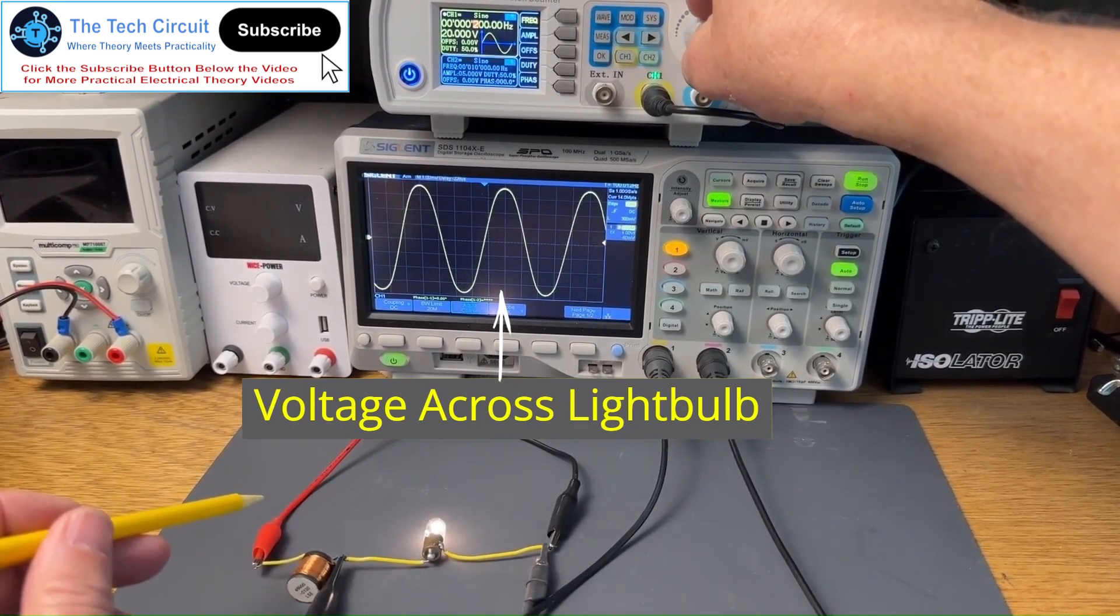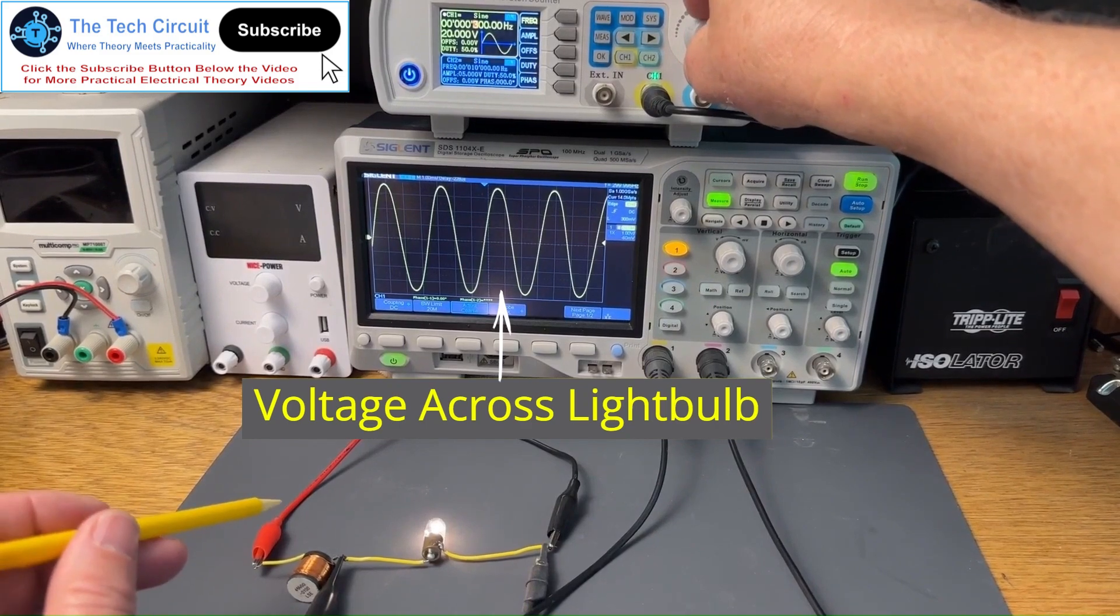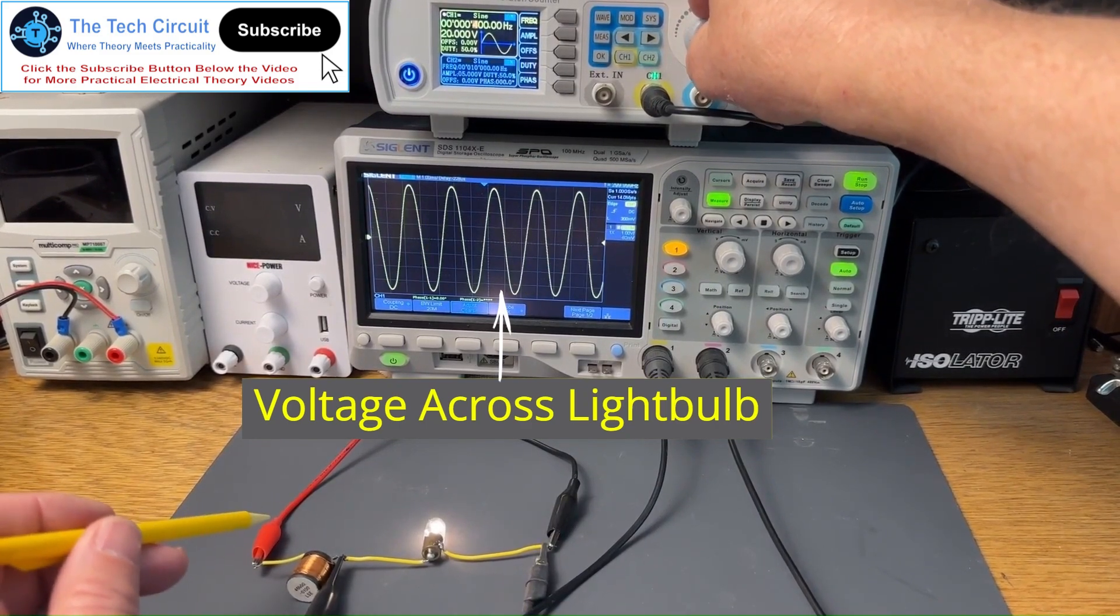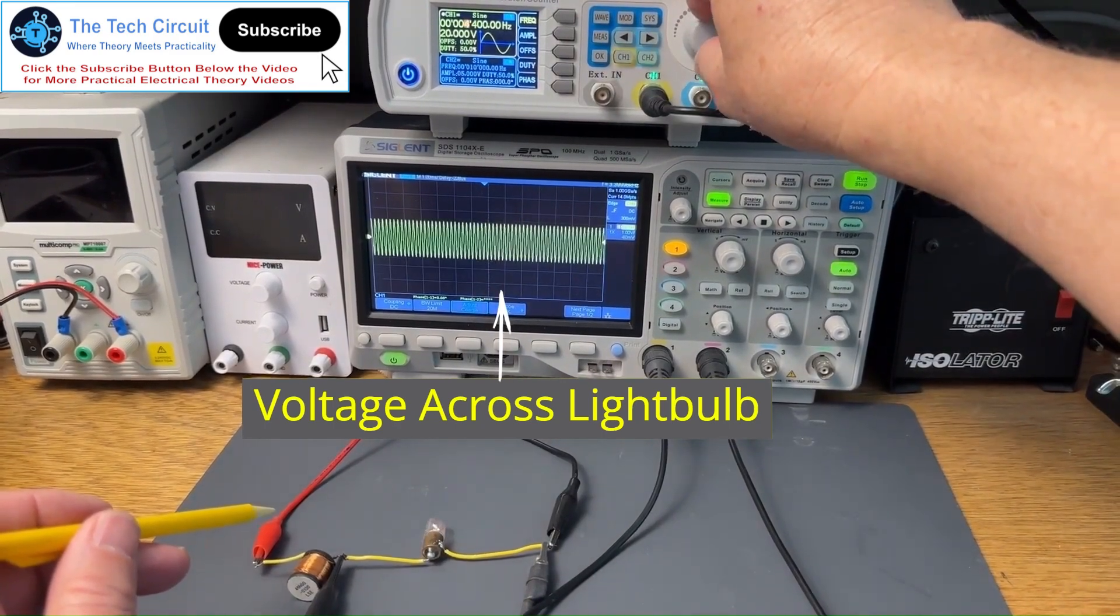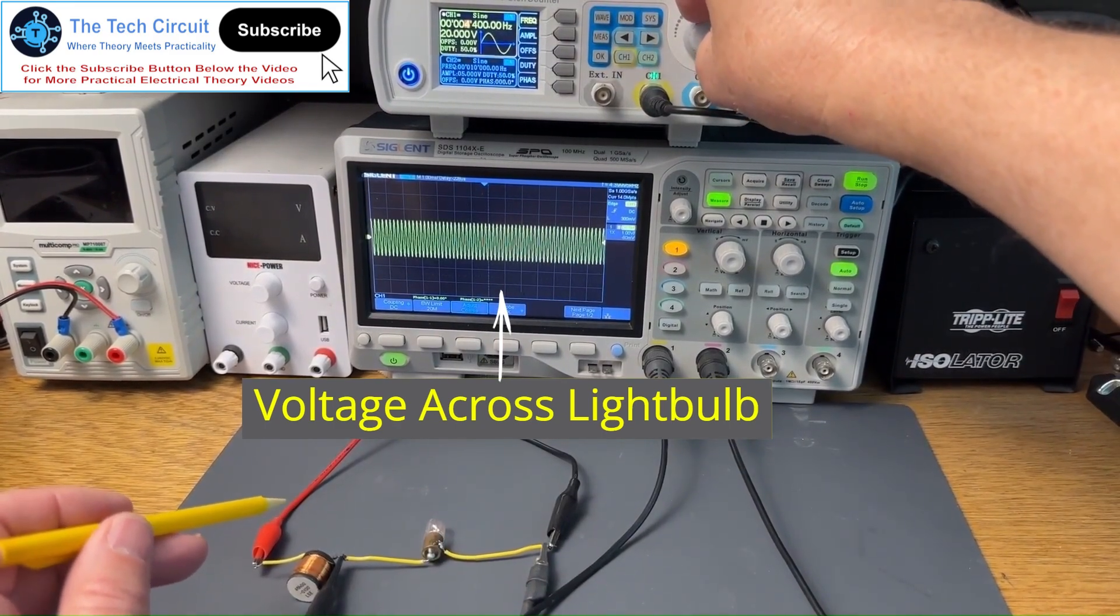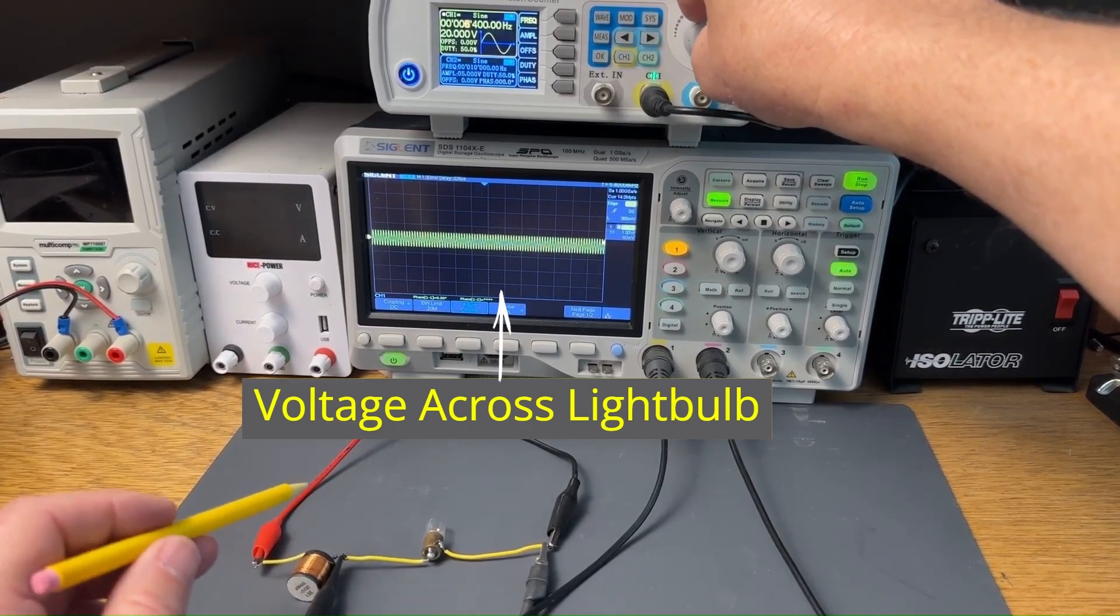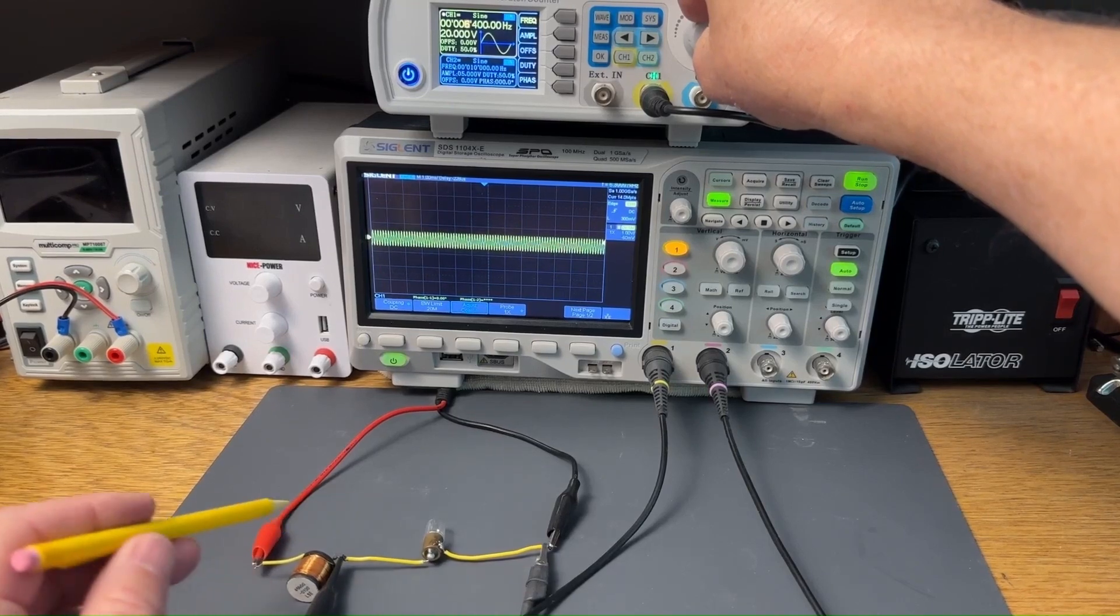If, however, I start to increase the frequency, the inductor's ohms increases and causes less current to flow through the circuit. Until, as you can see, the light bulb eventually goes out, implying that the inductive reactance, or ohms, of this inductor is approaching infinity.